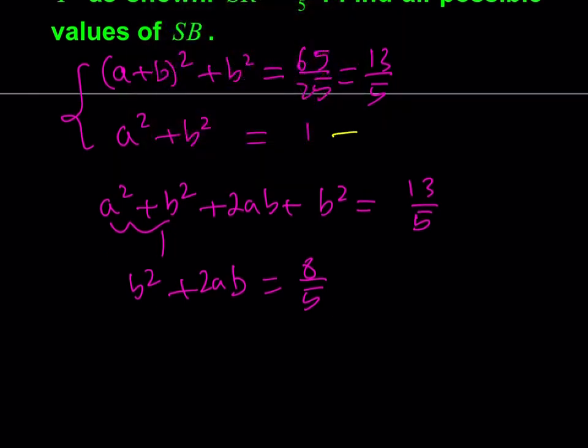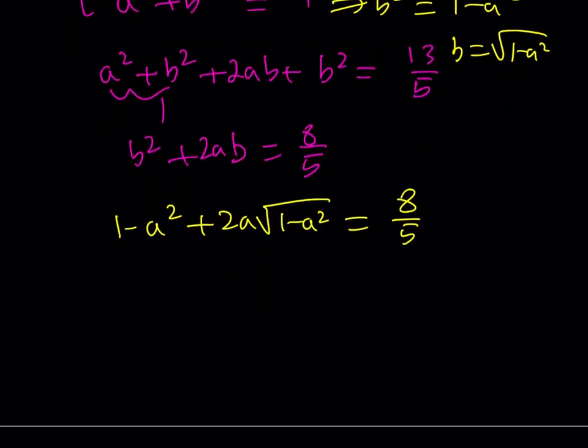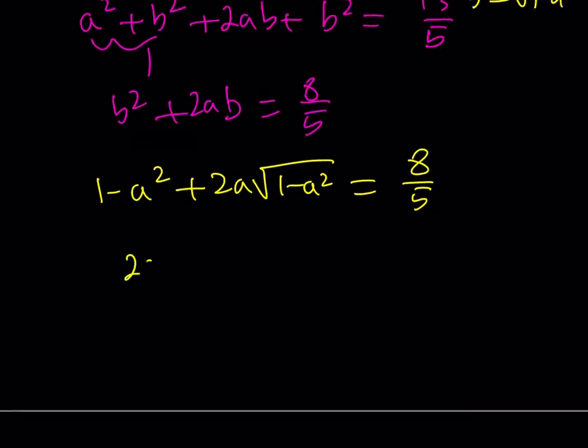So I get another equation like this. And what I can do here is I can isolate the B squared here as 1 minus A squared and B is going to be the square root of that. So let's go ahead and do those replacements. I'm going to replace B squared with 1 minus A squared and the B with square root of 1 minus A squared. And the whole thing is going to equal 8 over 5.